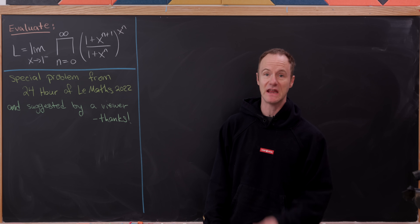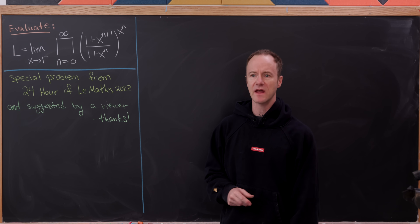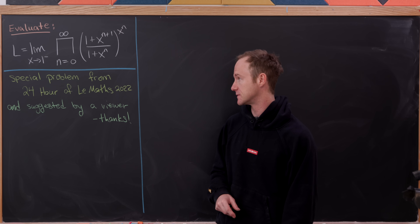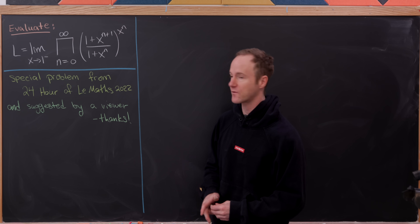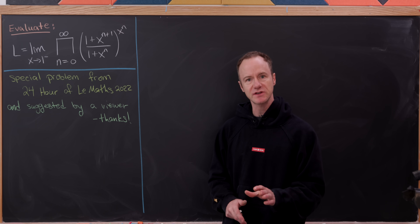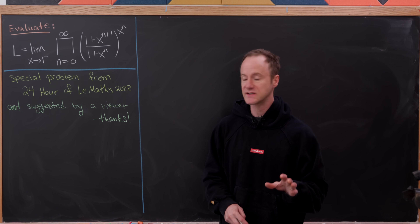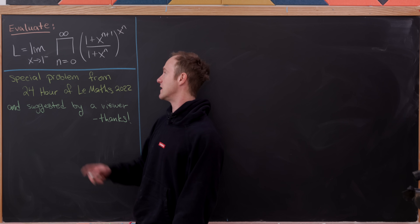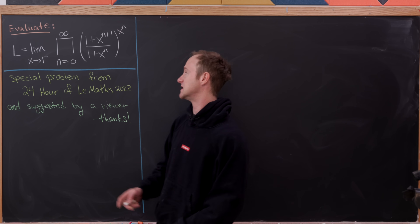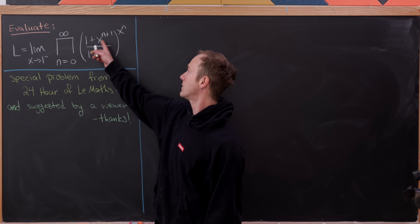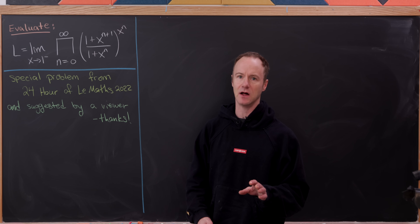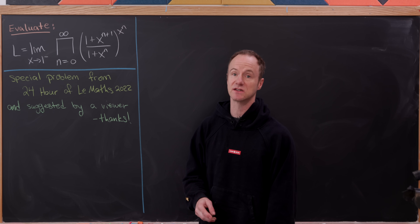Today we've got a really nice limit of an infinite product, and along the way of evaluating this we'll see lots of really nice tools that you can keep in mind for other problems. This problem came from an event called the 24 Hours of Le Maths in 2022, and it was also suggested by a viewer. We'd like to evaluate the limit as x goes to one from below of the product as n goes from zero to infinity of (1 + x^(n+1))/(1 + x^n), all raised to the x^n power. We'll call that limit L.